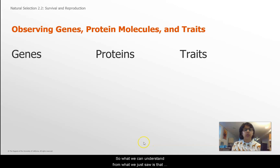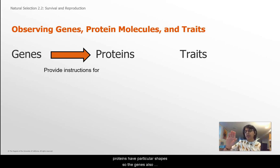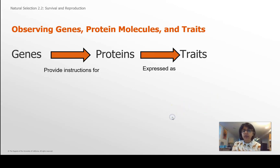So what we can understand from what we just saw is that genes provide instructions for making proteins, and these proteins have particular shapes. So the genes also dictate what shape that protein is. Those proteins are then, the way they fit together with the larger molecules, allow for traits to be expressed. This is what we call a central dogma or central concept of genetics in biology.